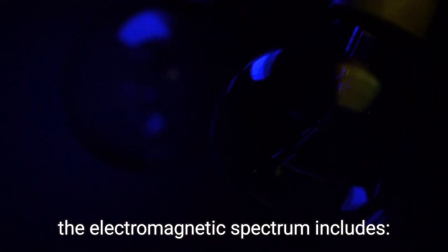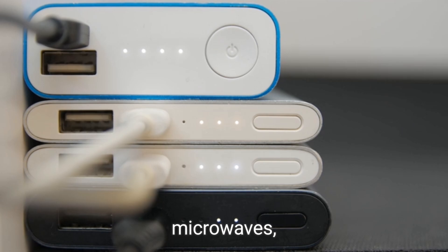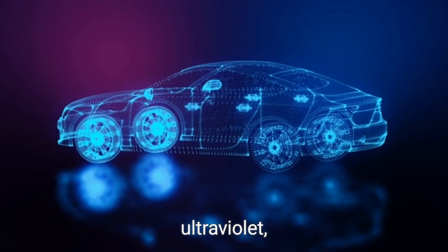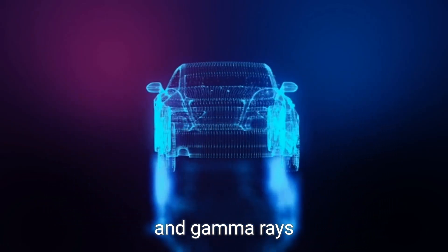the electromagnetic spectrum includes radio waves, microwaves, infrared, visible light, ultraviolet, X-rays and gamma rays.